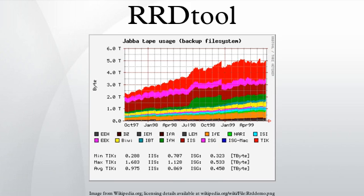RRTool aims to handle time series data like network bandwidth, temperatures, CPU load, etc. The data are stored in a circular buffer-based database, thus the system's storage footprint remains constant over time. Note that this is distinct from the computer science concept of round robin scheduling.